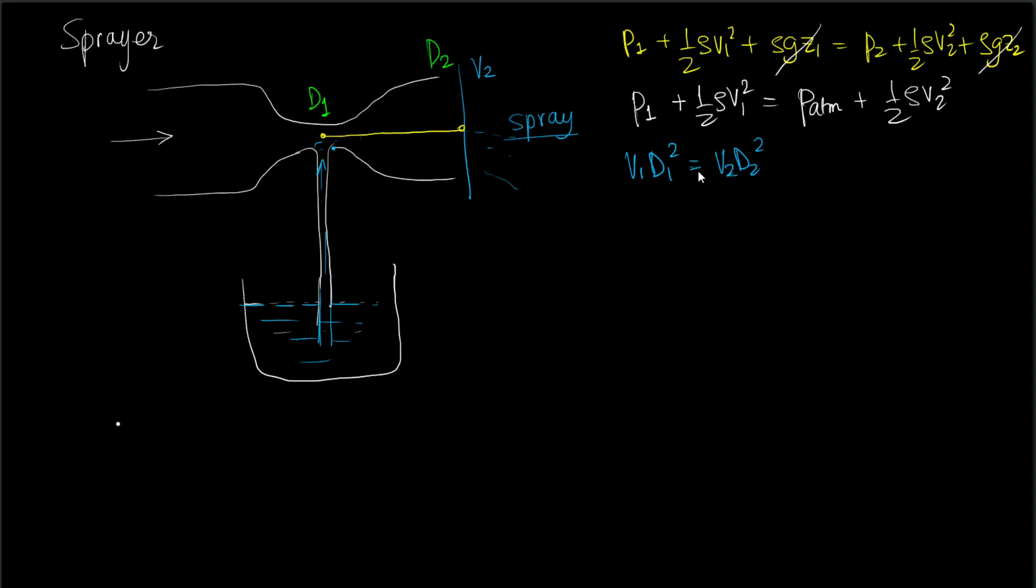And thus we can write p1 - p_atm = 1/2ρv2² - 1/2ρv1², and this is 1/2ρv2² common, 1 - v1²/v2². This is 1/2ρv2²(1 - ...). Now from this we have v1/v2 = d2²/d1², so this becomes d2⁴/d1⁴.